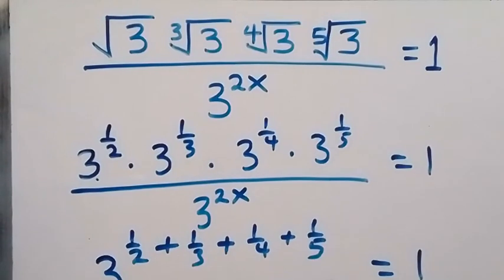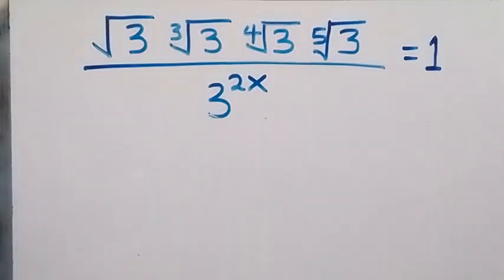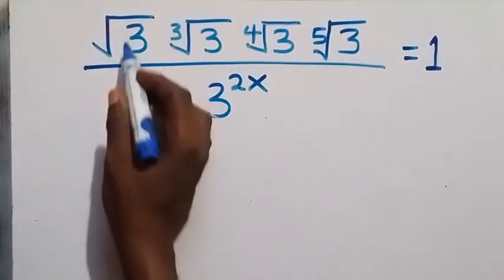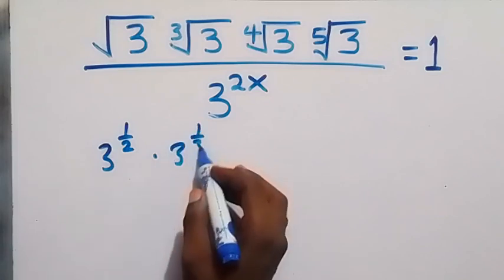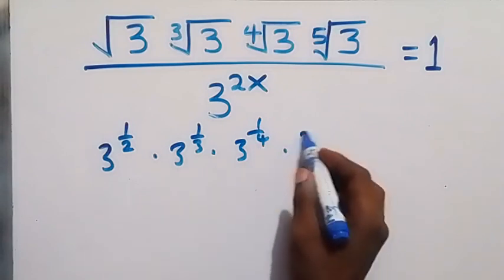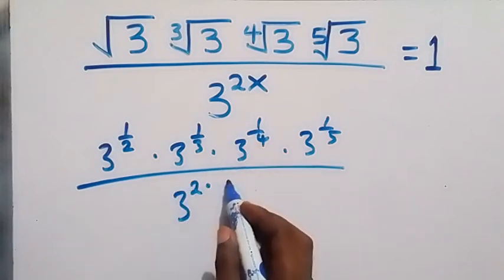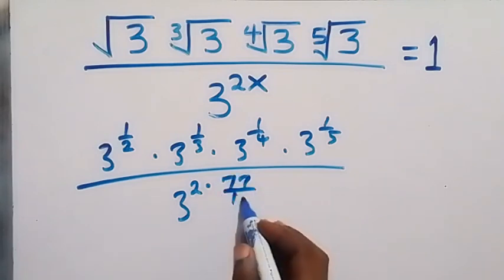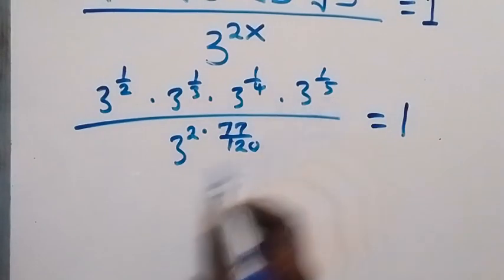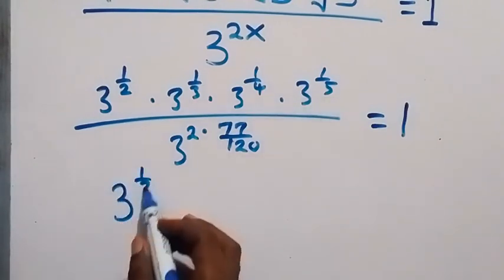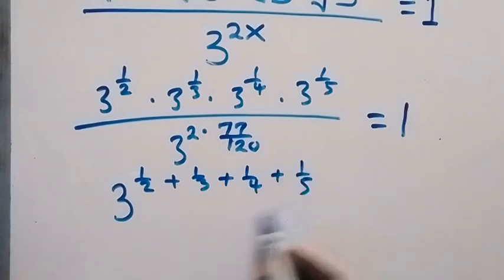Let's put x = 77/120 and verify it satisfies the given problem. We write 3 to the power 1/2 times 3 to the power 1/3 times 3 to the power 1/4 times 3 to the power 1/5, divided by 3 raised to power 2 times 77/120. Summing the top powers gives 3 raised to power (1/2 + 1/3 + 1/4 + 1/5), divided by 3 raised to power 77/60.